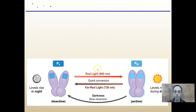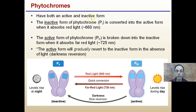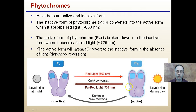Phytochromes have both an active and inactive form. The inactive form is PR, which absorbs red light at around 660 nanometers and converts to PFR, the active form. The PFR is broken down to the inactive form when it absorbs far-red light, or the active form can gradually revert back to the inactive form in the absence of light — during the darkness period. This slower reversion back to the inactive form is how plants tell the length of night. Naturally, when the sun sets, active PFR slowly converts to inactive PR, and the plant measures this to determine how long it has been night.